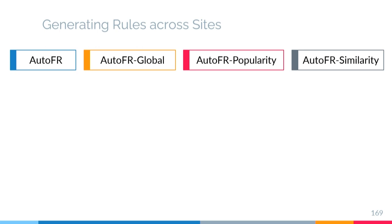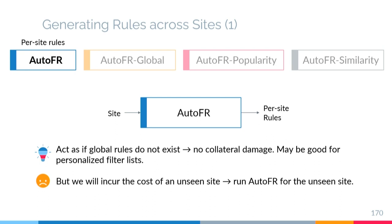The first approach is simply to use AutoFR as-is, acting as if global rules do not exist, so we don't have to deal with collateral damage. This approach may be good for personalized filter lists for users. However, we incur a cost when the user visits an unseen site — the user will have to wait for us to run AutoFR to generate new per-site rules.